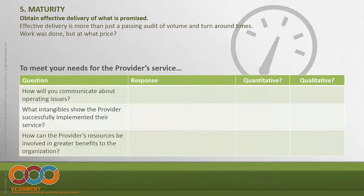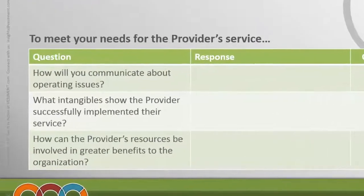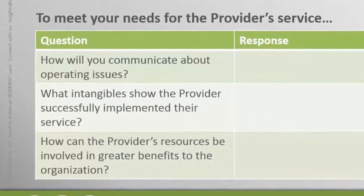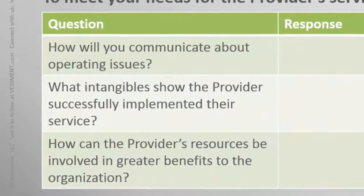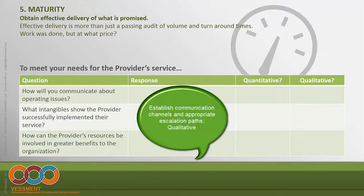The next area is about maturity — actually getting the delivery of what is promised from the engagement. It's more than just a passing audit of volume and turnaround times in the contract; you're looking at how the work was done and at what cost. You could be having a Pyrrhic victory where the outcome was what was needed, but your own staff was pulling their hair out with a lot of headaches and heroics to pull it through. Ask: how will you communicate about operating issues? What are the intangibles the provider needs to successfully implement their service? Establish new communication channels, both formal and informal, so you know what you're signing up for and how you'll communicate once the engagement is underway.